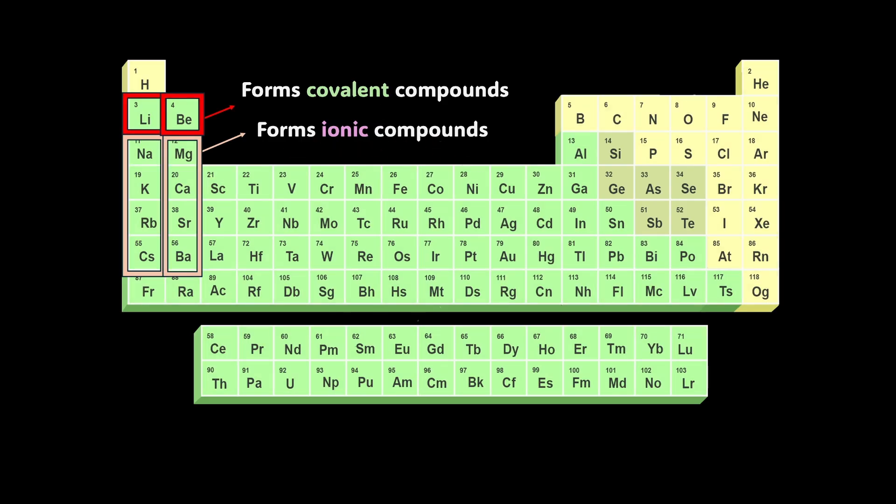So, that's quite interesting, you see. The compounds of lithium and beryllium are predominantly covalent in nature. Similarly, the rest of the elements in their respective groups are predominantly ionic compounds. This is the first anomalous behavior of the second period elements. And it's not just this anomalous behavior. You know what's even more fascinating?